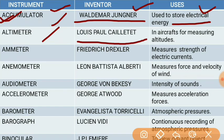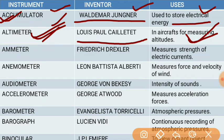The next instrument is the altimeter. It is mainly used in aircrafts for measuring altitudes. For exams, the inventor and uses are both important — typically the question asks about the instrument's name, where it is used, and what it measures.